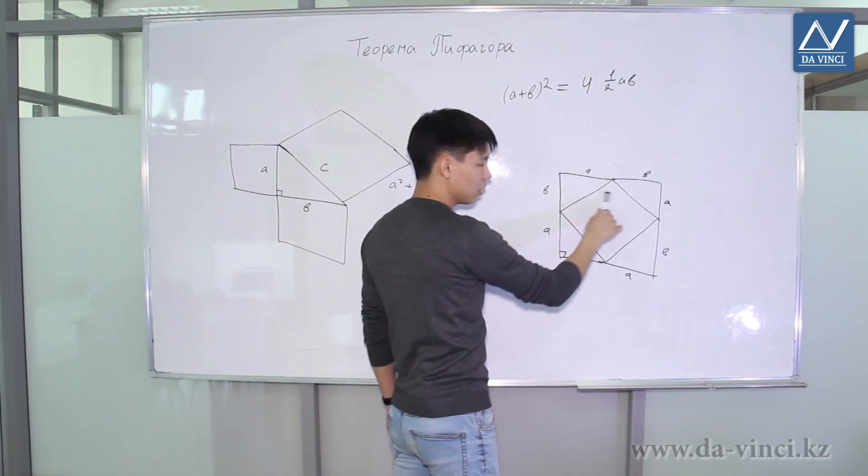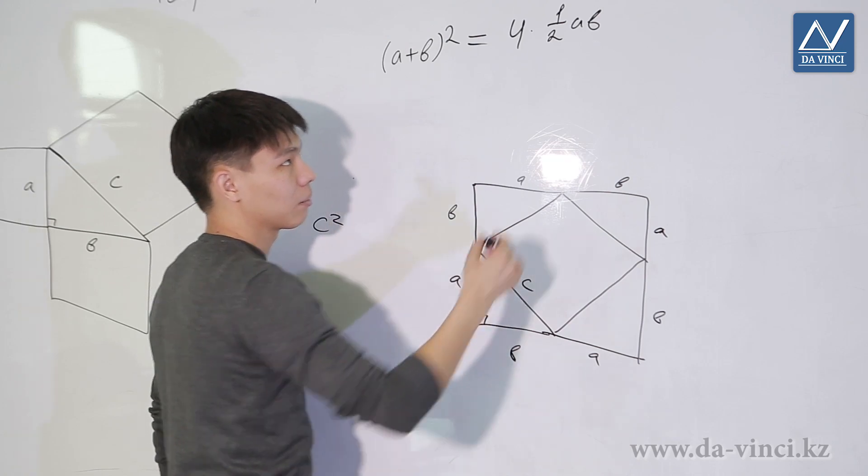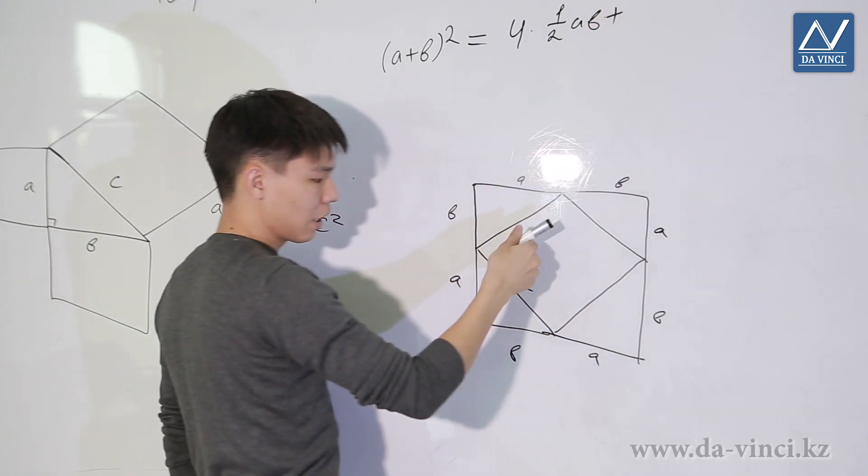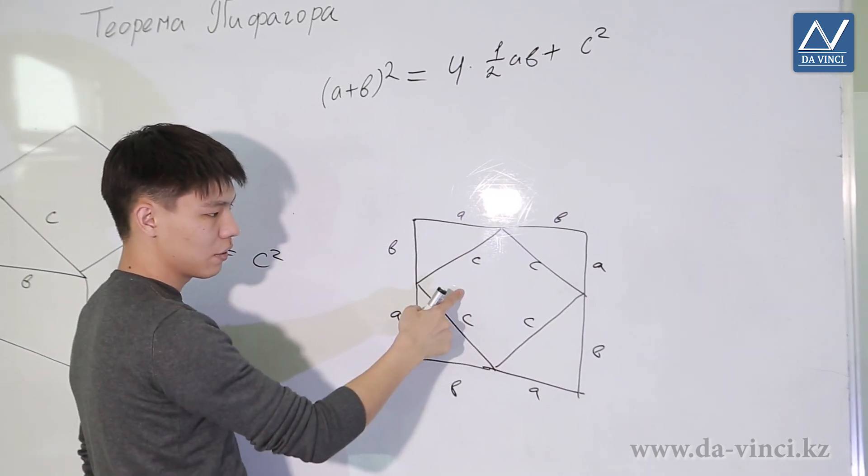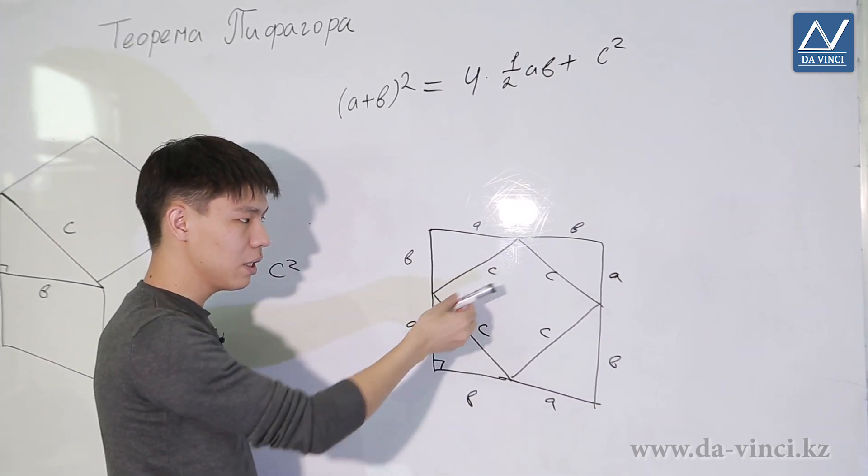And plus the area of this square with side C, because it will be C. By the way, it is easy to make sure that this is really a square. Firstly, all sides are equal, so it's a rhombus.